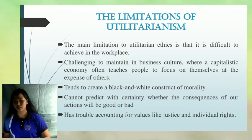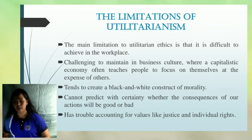Utilitarianism also cannot predict with certainty whether the consequences of our actions will be good or bad, because the results of our actions happen in the future. Utilitarianism also has trouble accounting for values like justice and individual rights. For example, say a hospital has four people whose lives depend upon receiving organ transplants — a heart, lungs, kidney, and a liver. If a healthy person wanders into the hospital, his organs could be harvested to save four lives at the expense of his one life. This would arguably produce the greatest good for the greatest number, but few would consider it an acceptable course of action, let alone an ethical one.